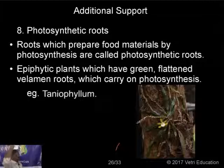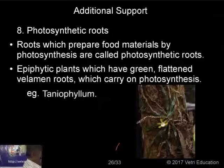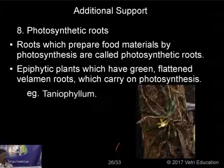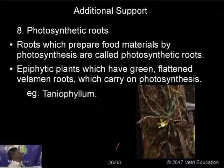The next type is photosynthetic roots. Generally, photosynthesis is carried out by stems and leaves. Here, the plant is very small, so the roots produce photosynthetic material. Roots which prepare food materials by photosynthesis are called photosynthetic roots. These are also epiphytic plants which have green, flattened velamen roots. These roots are green in color and carry out photosynthesis. Example: Tinospora and Taeniophyllum, which live on other plants. These roots are green in color and prepare food materials.